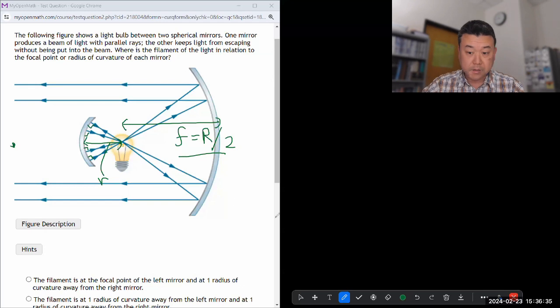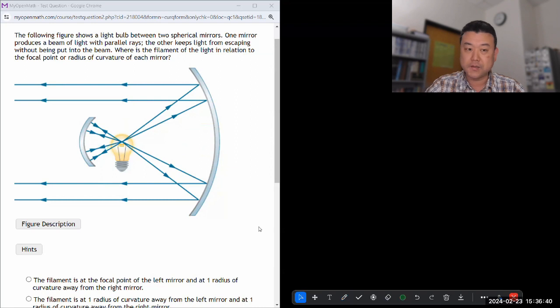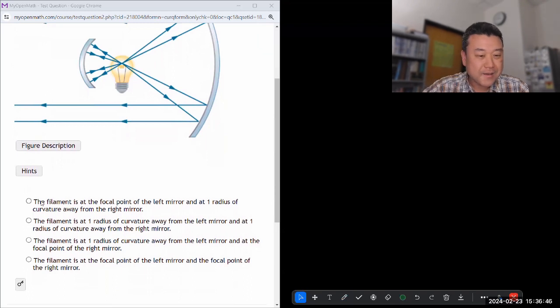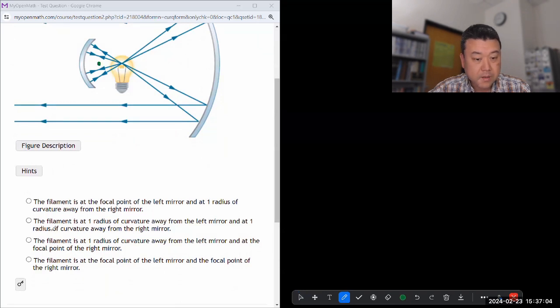So I'm looking for this is a multiple choice question. So you could technically answer it by abusing your infinite attempts. Let me see if I can find the one choice that matches with the description I was giving. Filament is at the focal point of left mirror. No, that's not right. It's not at the focal point. The focal point of the left mirror is actually somewhere over here, half the radius of curvature. Filament is at one radius of curvature away from the left mirror. Yeah, and it's the focal point of the right mirror. Yeah, that's right.